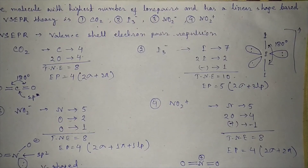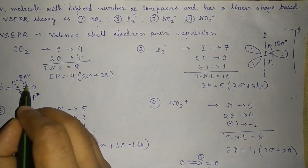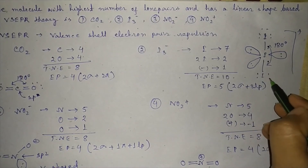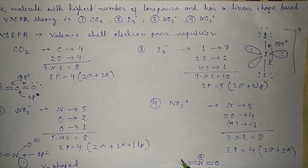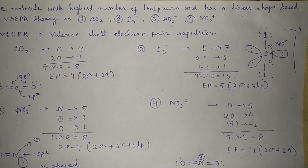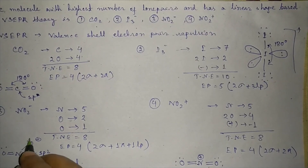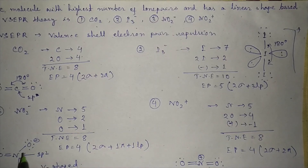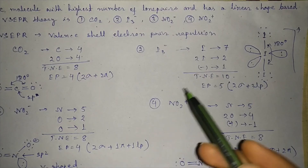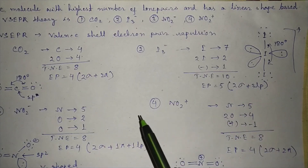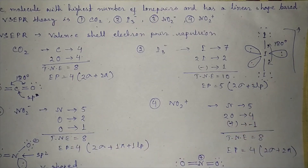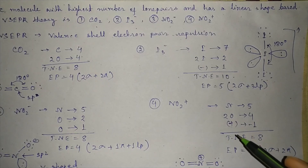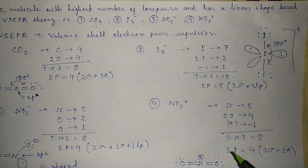Now comparing lone pairs: in CO₂, each oxygen has two lone pairs. In I₃⁻, each iodine has three lone pairs, and the central iodine has three lone pairs as well — the highest total. In NO₂⁻, each oxygen has two lone pairs. In NO₂⁺, each oxygen has two lone pairs. Since the question asks for the linear molecule with the highest number of lone pairs, the answer is I₃⁻.